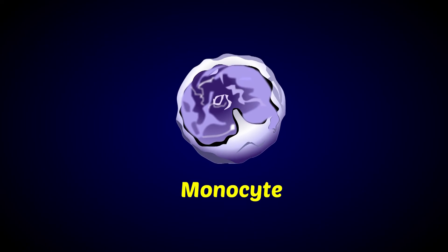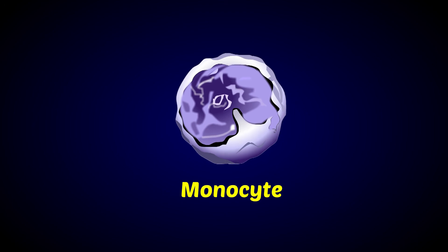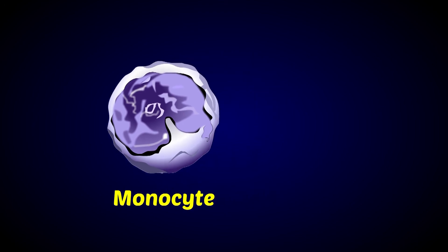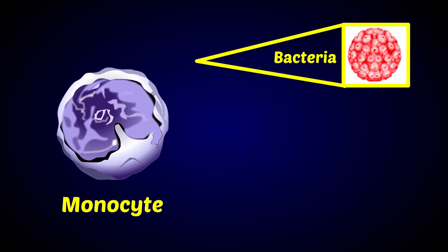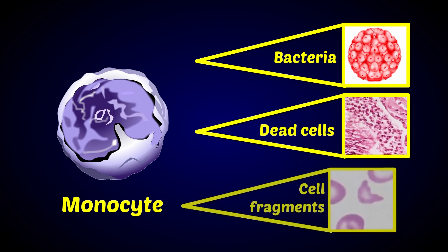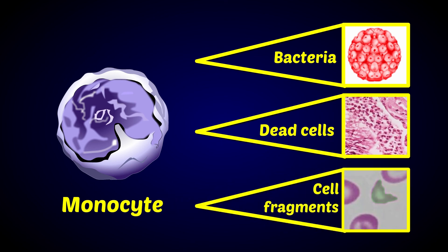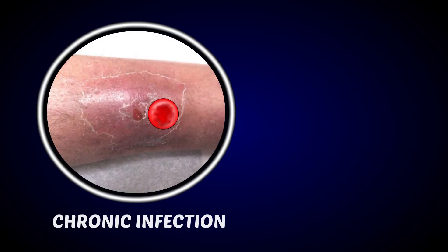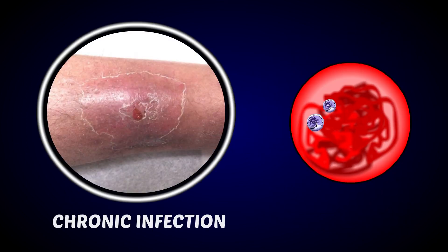What are monocytes? These are the largest leukocytes. They destroy bacteria, dead cells, and cell fragments. During chronic infection, their number increases.